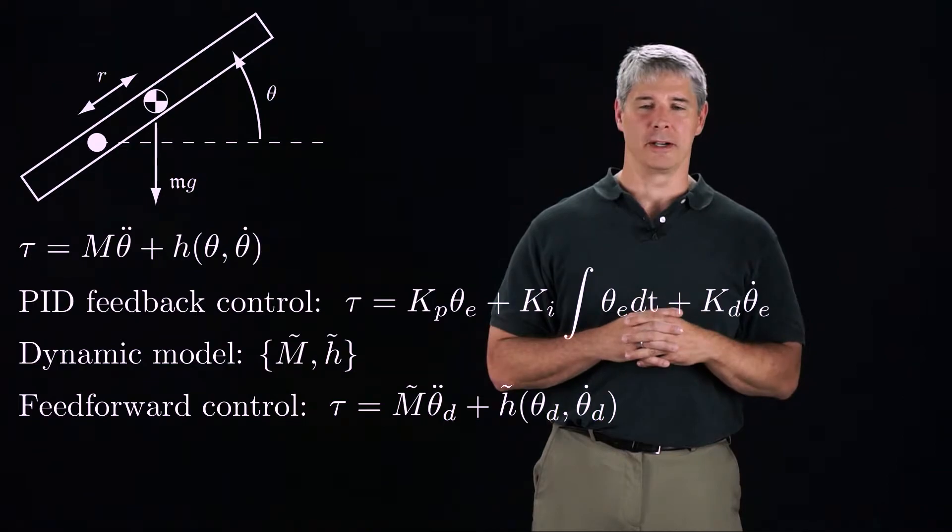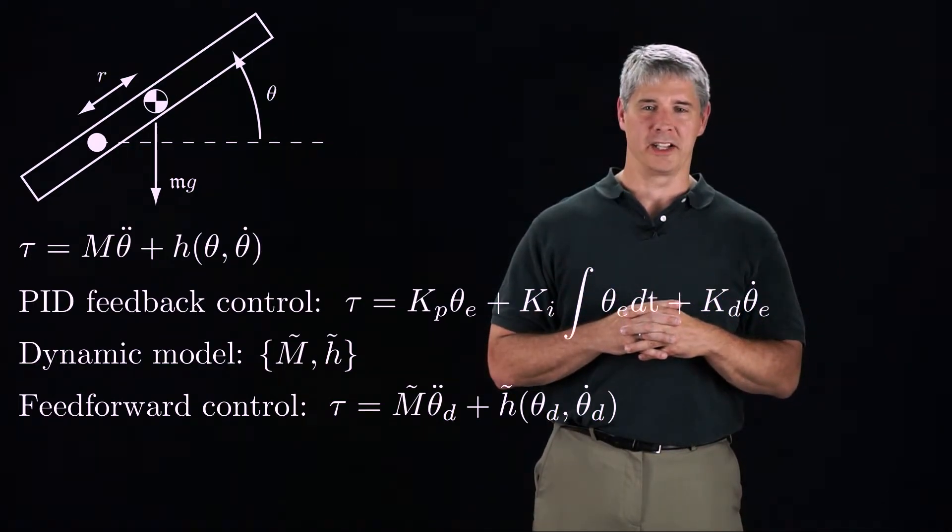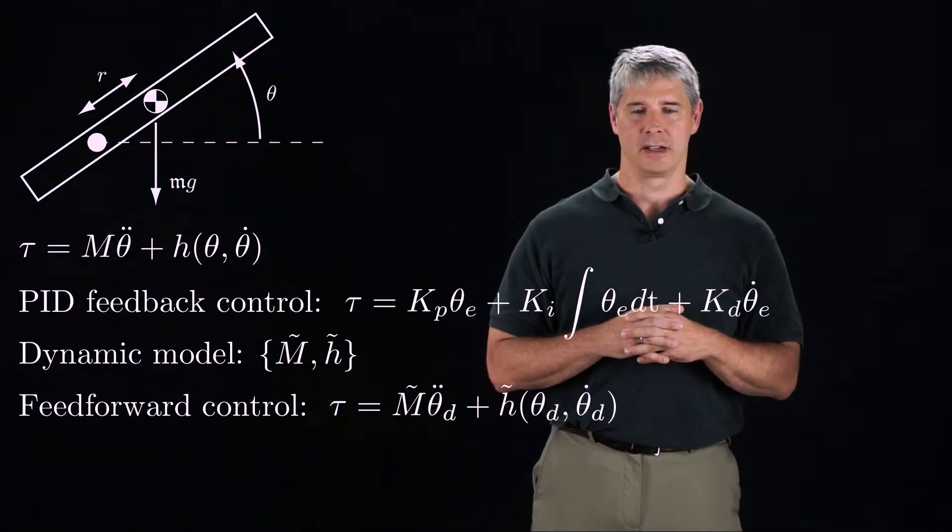There's no feedback from the joint. Of course, feedforward control will not work well on its own, as we never have a perfect model of the dynamics. There's no mechanism to recover from errors.